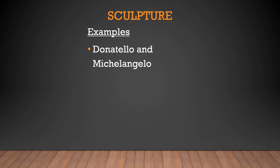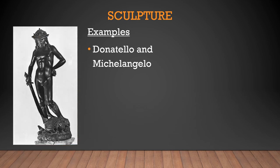In sculpture, one of the earliest works was Donatello's David, showing the influence of both humanism and religious themes — King David from the Old Testament as the subject. Donatello used naturalistic forms, anatomy, and linear perspective, and was one of the first to revitalize this type of sculpture, which had fallen out of use during the Middle Ages in Europe.